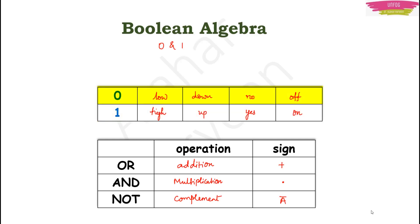The value 0 is called low, down, no, or off. For 1, you say high, up, yes, or on. Now, if the operation is addition, you call it an OR operation. If it is multiplication, you call it an AND operation, denoted by a dot. NOT operation means complement — the complement of 0 is 1, and the complement of 1 is 0.